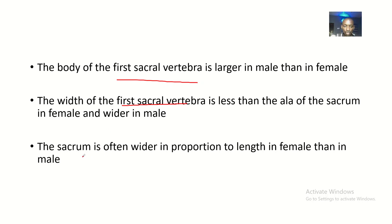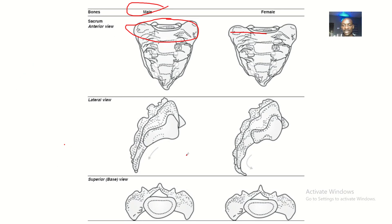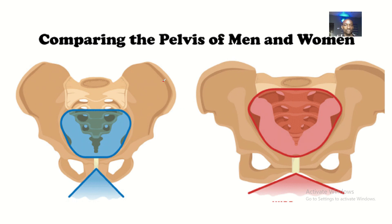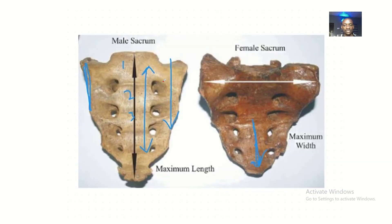The sacrum as a whole is often wider in proportion to its length in females than in males. So in females the sacrum is wider than it is long, but in males the length is greater than the width. Here is another good picture I'll be using.